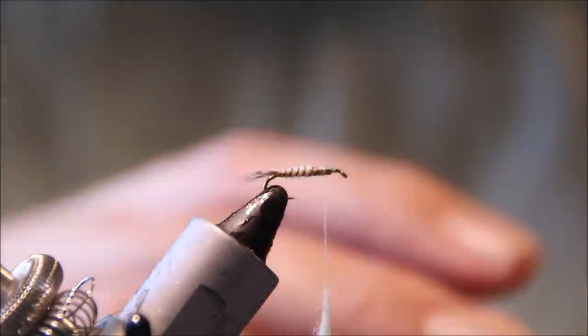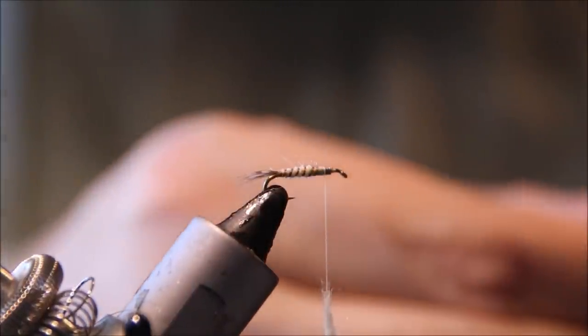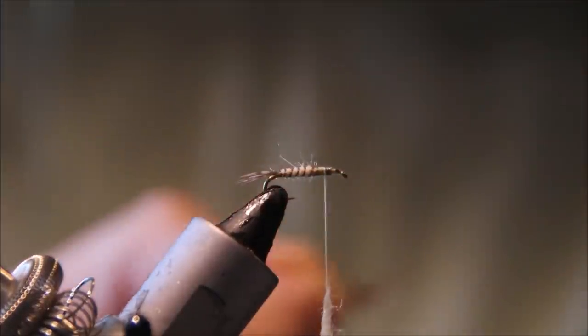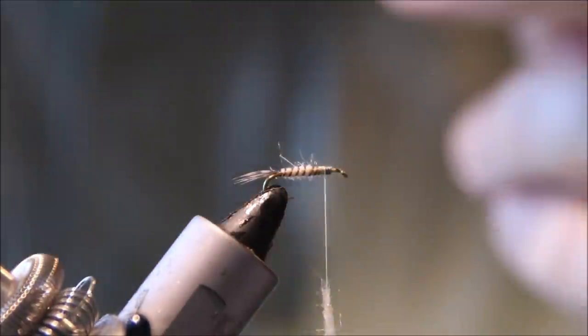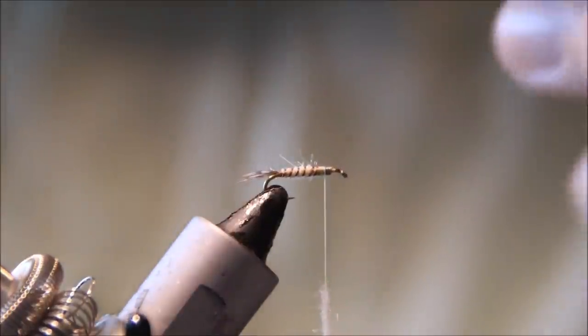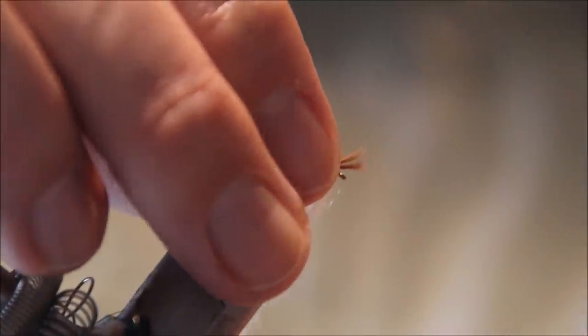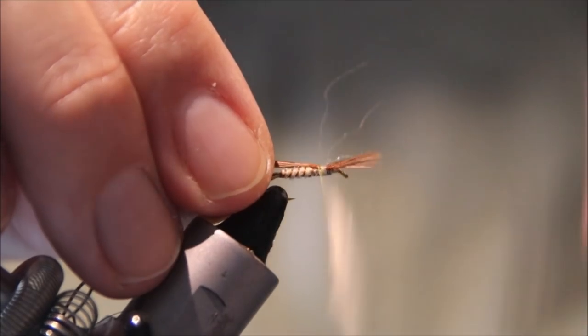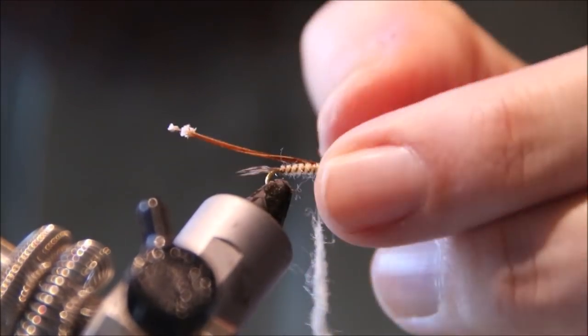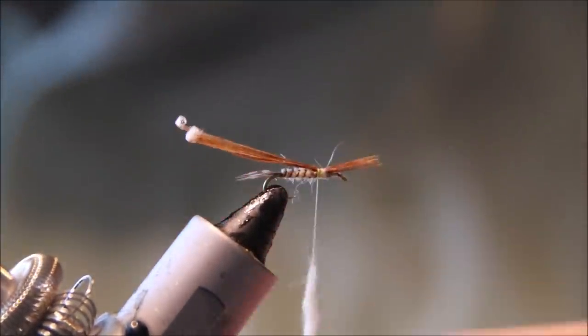For the thorax cover I'm using pheasant tail fibers. Don't be shy - take a decent bunch. I like to use the stuff from the bottom of the pheasant tail that's too short for a full nymph body. There's probably eight or ten fibers here. Catch it in on top and take it back just behind the thorax.